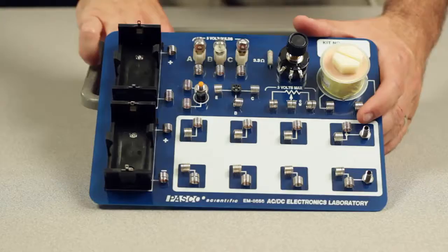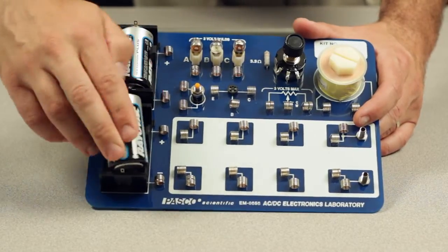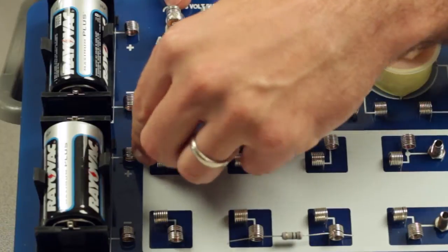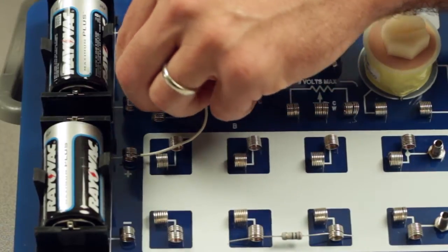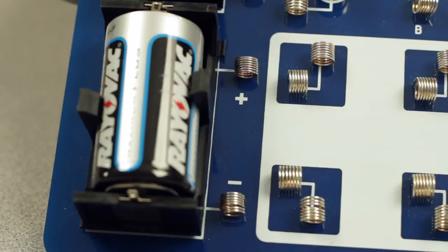When building circuits on the AC-DC circuit board, first insert the D-cell batteries into their holders. Connect the two batteries in series to produce a full 3-volt power source. Users should be mindful of the battery polarity printed on the board as this may play an important role in your experiment.